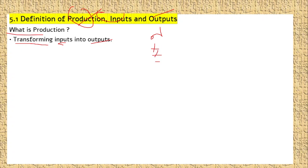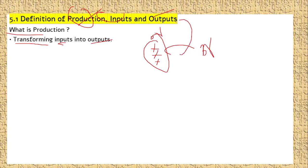As a sole company, this is an example of a machine, which is an input. This is an output of the output. This is a production.